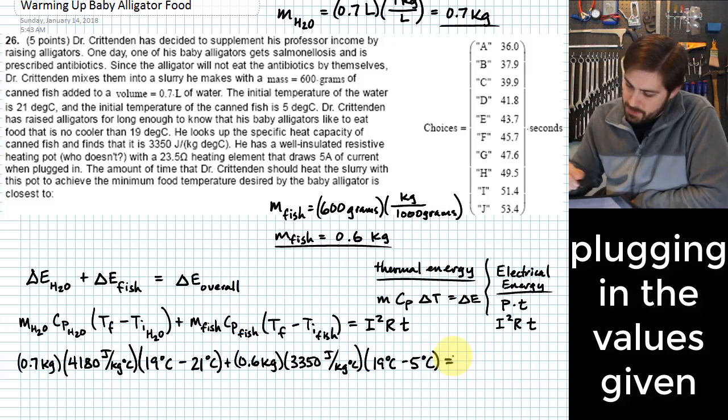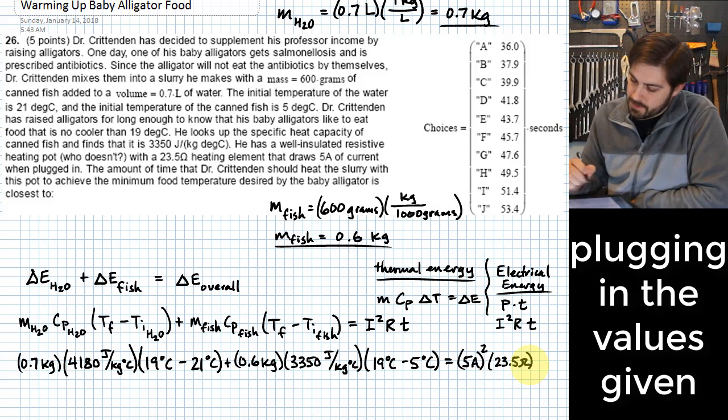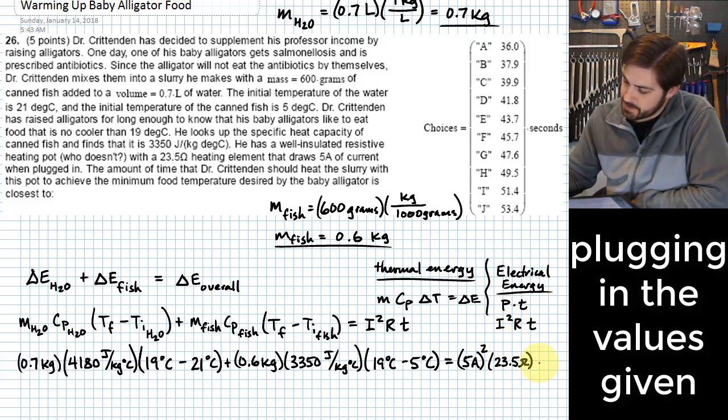Okay, and this is going to be equal to 5 amps squared. The resistance value is 23 and a half ohms, and then the last piece that we need is the time.